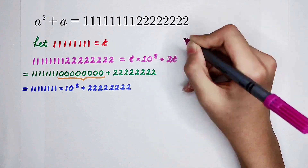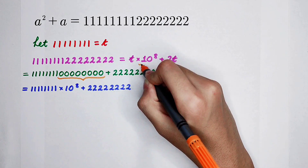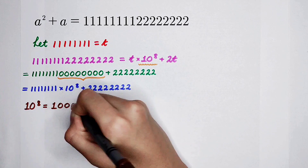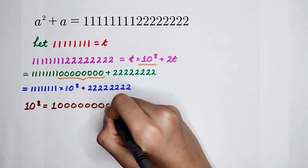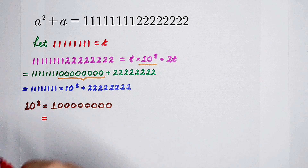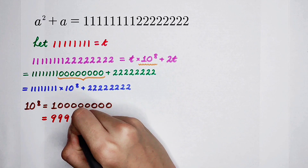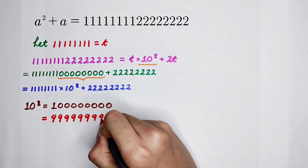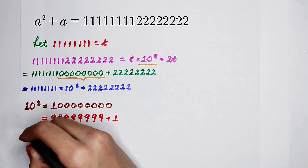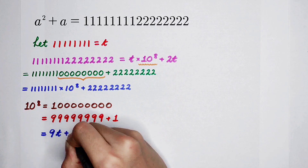In terms of t, this is t times 10 to the power of 8, plus 222...2 (a string of 2s). How can that string of 2s be written in terms of t? It is 1 followed by 8 zeros. If you want to write it as a term of t, it can be written as 8 times 9, and then plus 1.